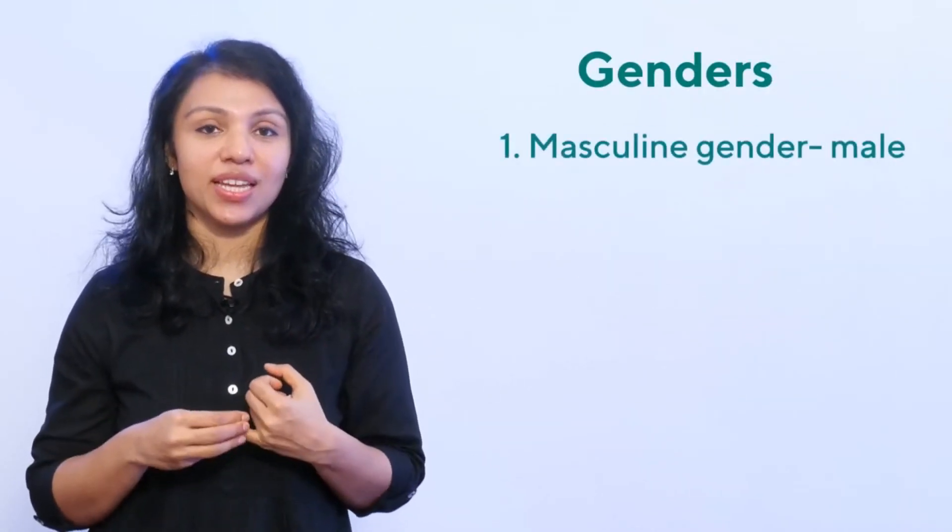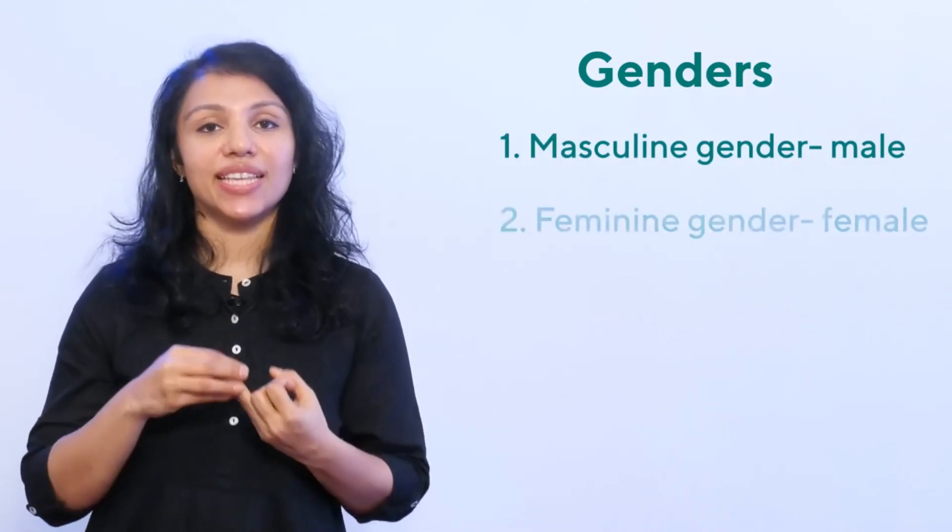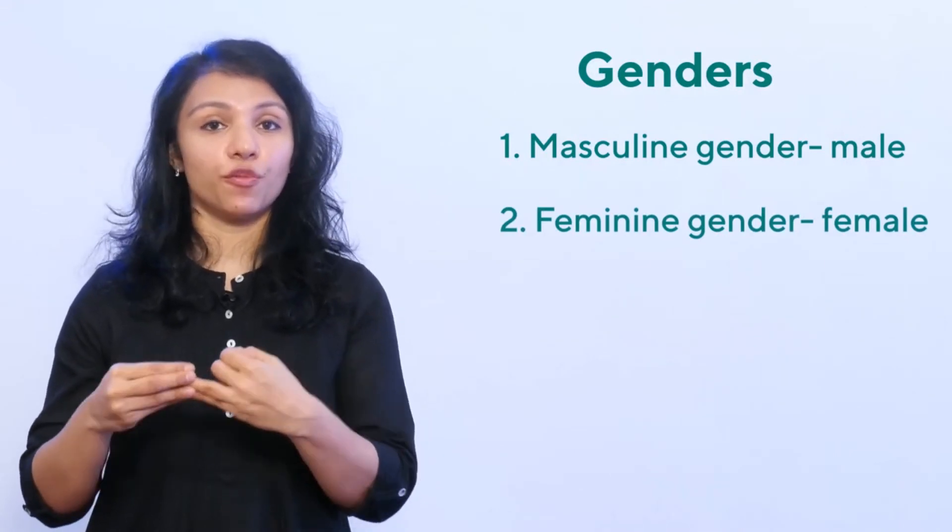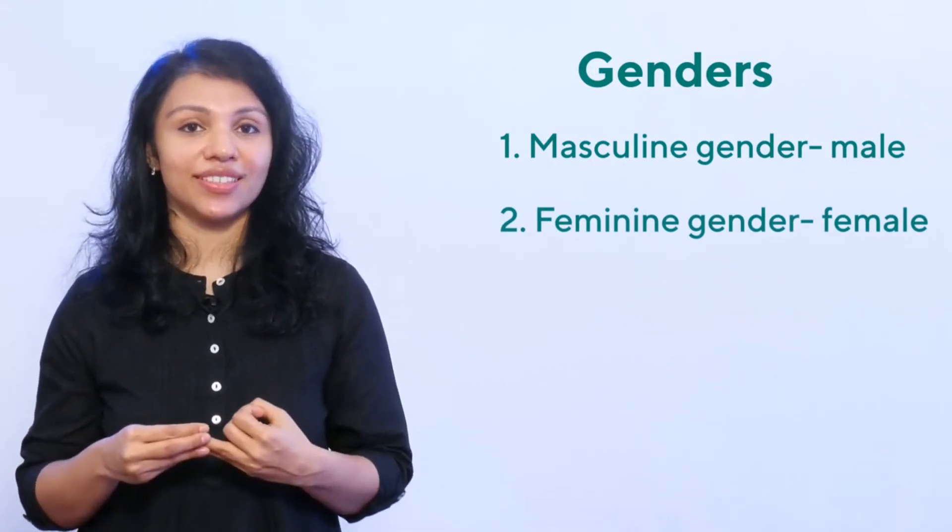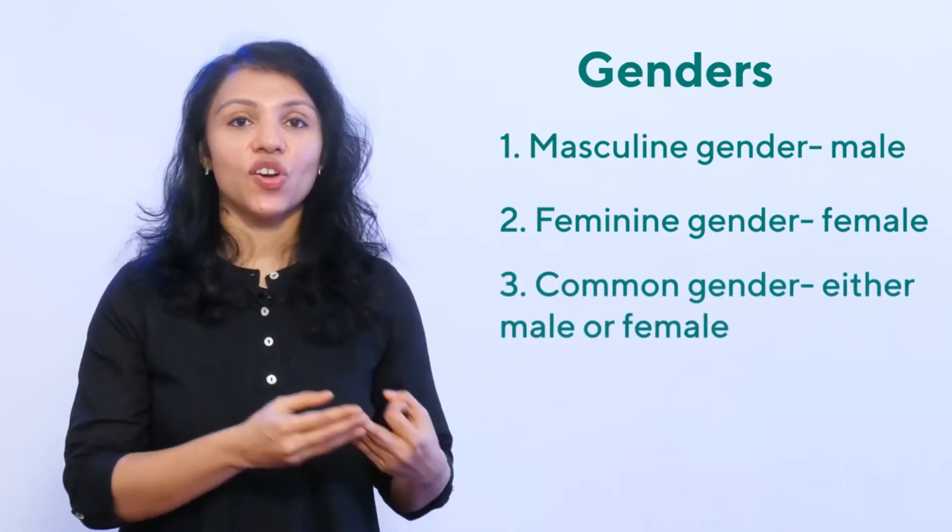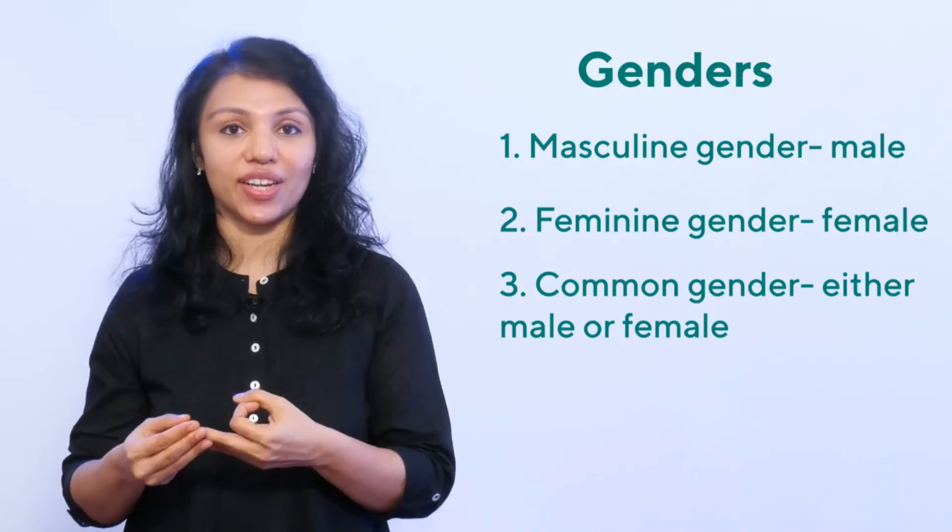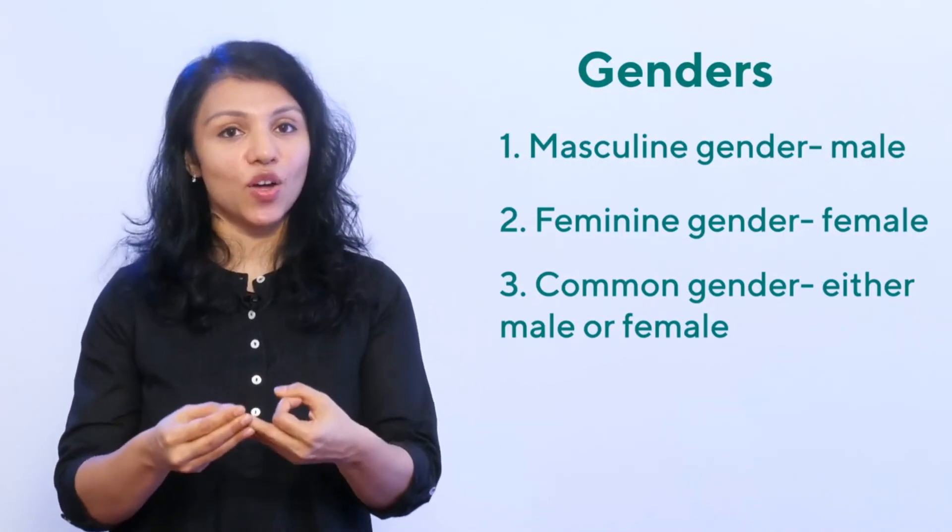Now we've reached the grammar section. In this section, we learn about genders and it's nothing complicated like in other languages like French or Hindi. It's pretty straightforward. There are four genders. One is masculine, for example, boy. It is denoting a male. The second one is feminine gender denoting a female. For example, girl. The third one is a common gender. It can be either male or female. For example, child. It can be a boy child or a girl child. If you've not specified it, it becomes a common gender.